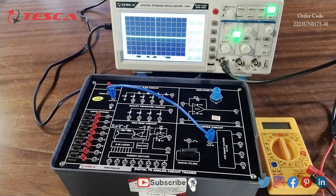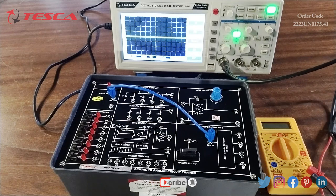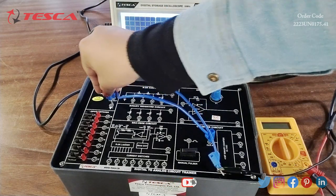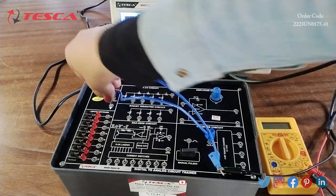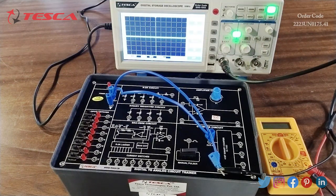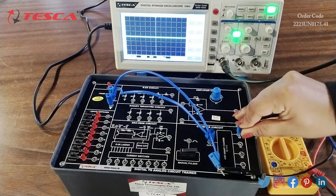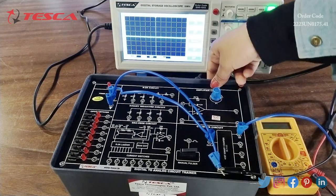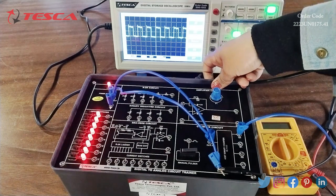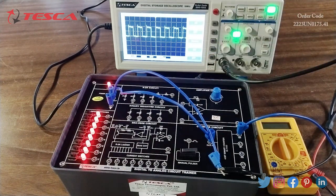Then I will observe the counter output at Q0, Q1, Q2 and Q3. So what I will do, I will connect it to the ground and to Q0. And I will switch on. You can see the result on the display.